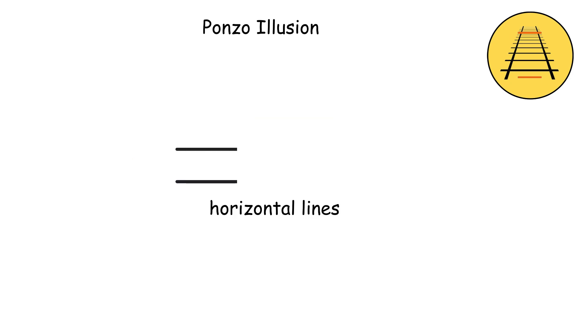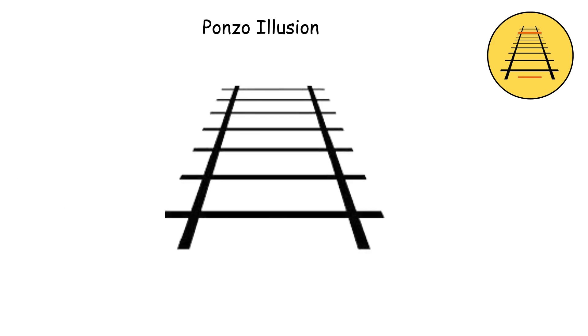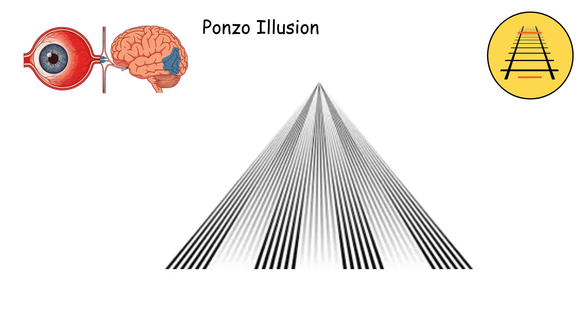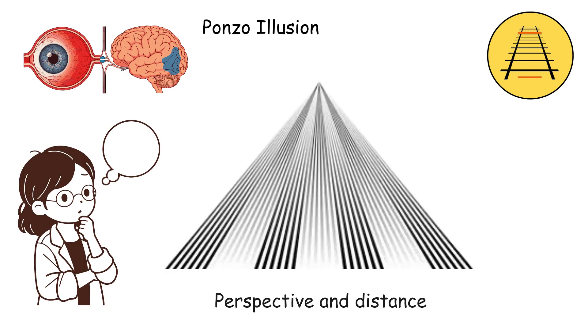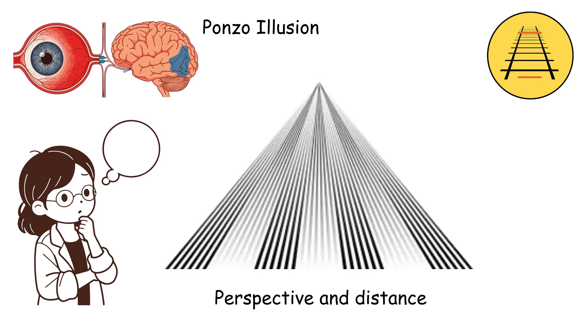In this illusion, you've got two horizontal lines of equal length placed between two converging lines that look like those railroad tracks. Your brain sees the converging lines and immediately thinks perspective and distance.